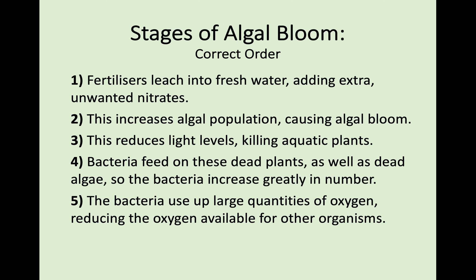The correct order starts with fertilisers leaching into the fresh water, bringing extra nitrates into the water system. Next, this increases the algal population, causing an algal bloom that spreads over the water surface. This reduces light levels by blocking sunlight, which kills aquatic plants. Then bacteria feed on the dead plants and algae, increasing greatly in number and using up huge quantities of oxygen. This reduces oxygen available for all other organisms and effectively kills off the rest of the ecosystem.